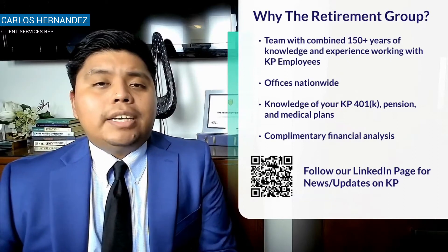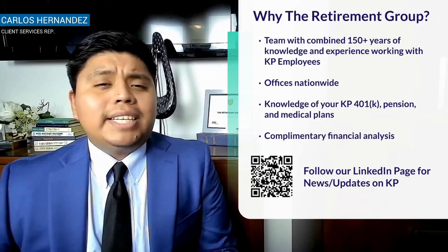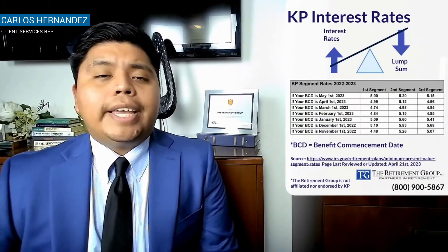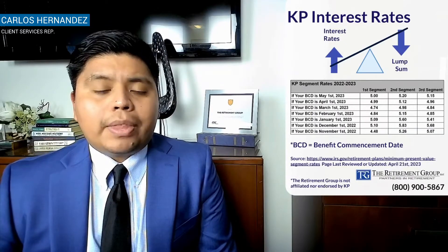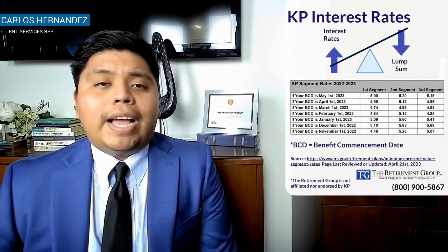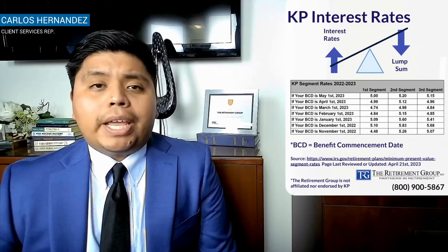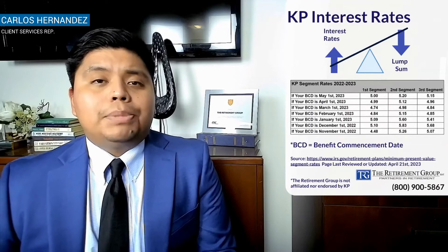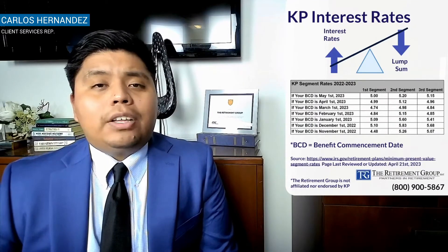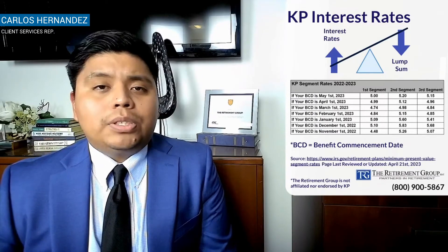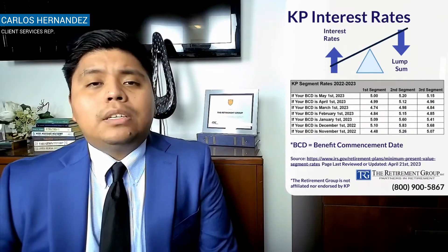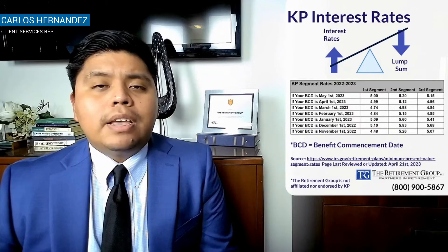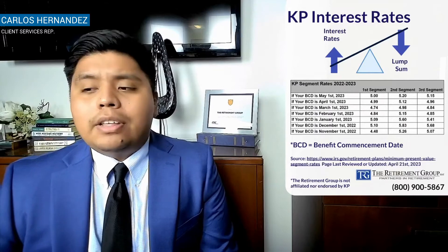For today's agenda, we're going to be talking about interest rates — specifically the minimum present value segment rates, which are the rates used to calculate your pension lump sum value. This is specific to the pension lump sum, where these rates are used to calculate the present value of that lump sum amount given future payments. Those future payments correspond to the single life annuity payment option, whose value is used to derive all your other pension payment options. These segment rates are based on high-quality corporate bond yields with maturities corresponding to the timing of your expected pension payments — that's why you see three different segment rates on the middle graph on the screen.